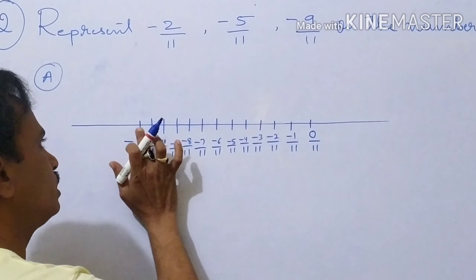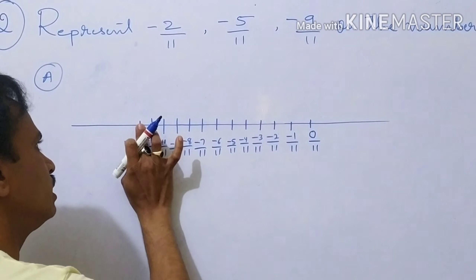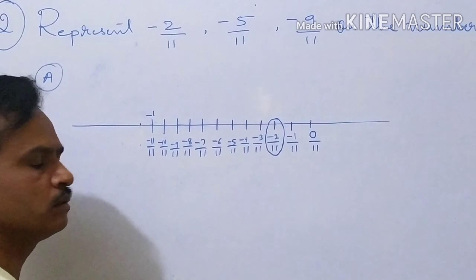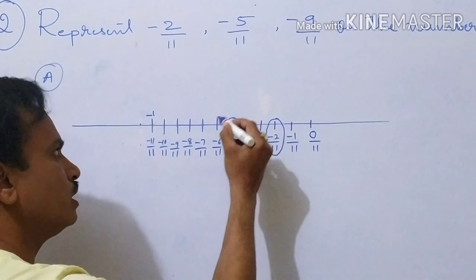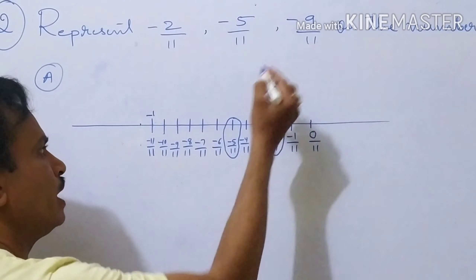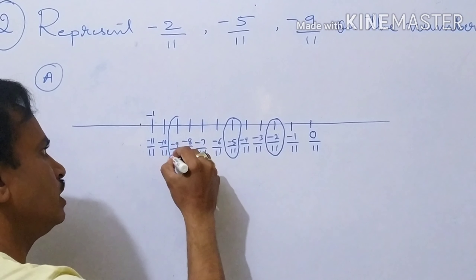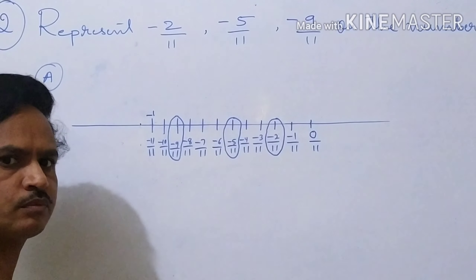So here, minus 11 by 11 — 11 cancels, so this part will be minus 1. Now the first point is minus 2 by 11 — here is the minus 2 by 11. The next point is minus 5 by 11 — here is the minus 5 by 11. Then minus 9 by 11 — this point is minus 9 by 11. Understood.